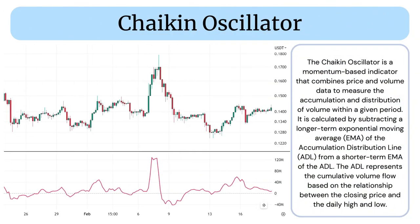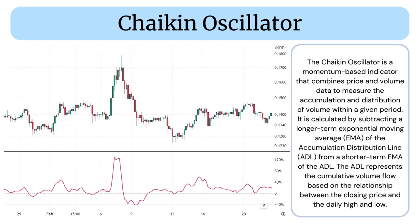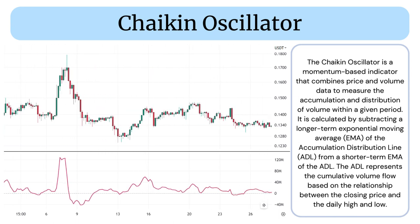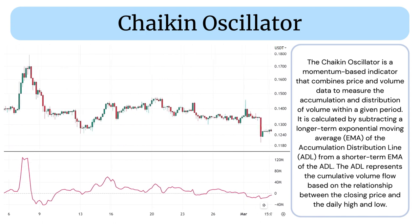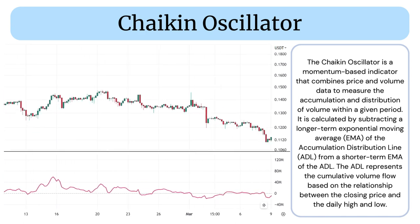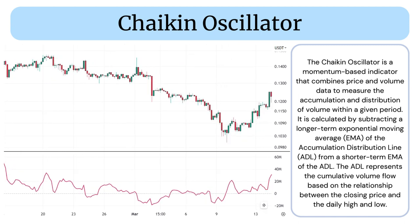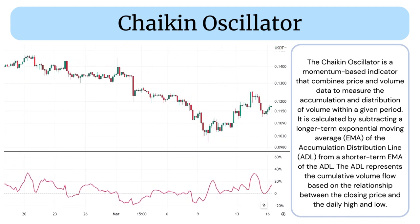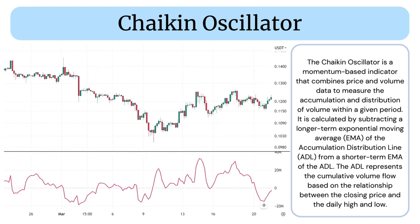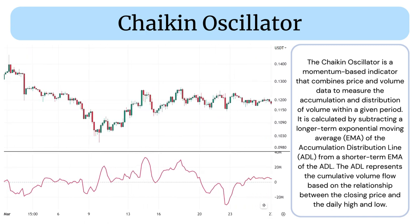The Chaikin Oscillator is a momentum-based indicator that combines price and volume data to measure the accumulation and distribution of volume within a given period. It is calculated by subtracting a longer-term exponential moving average of the Accumulation Distribution Line (ADL) from a shorter-term EMA of the ADL.